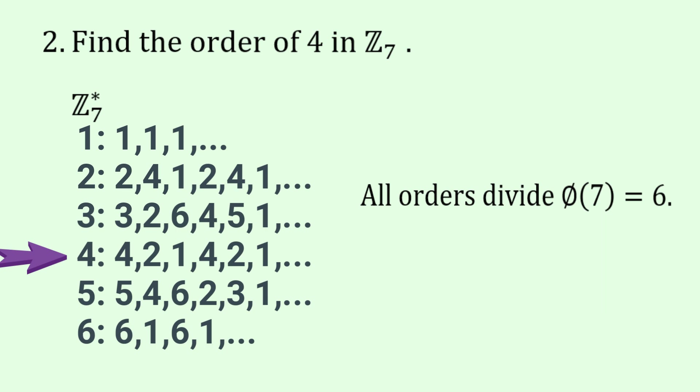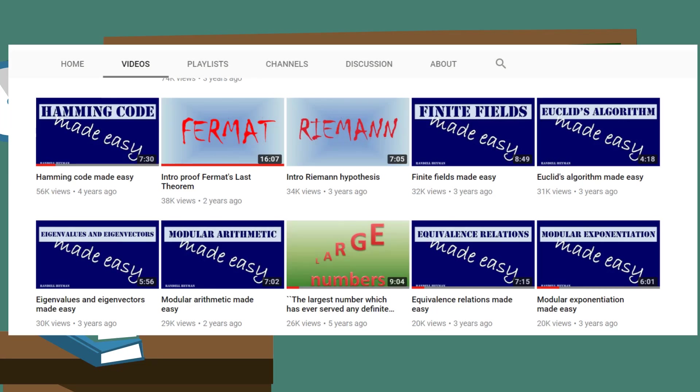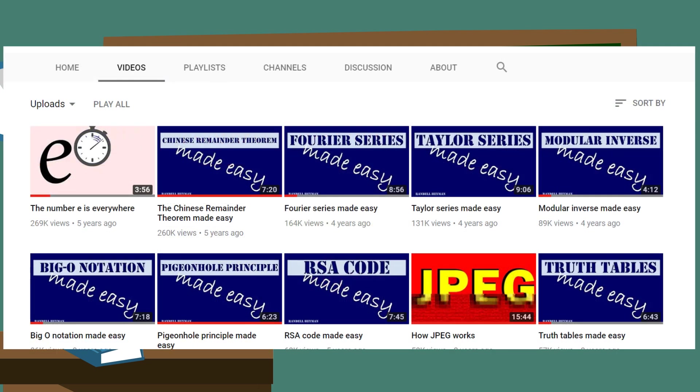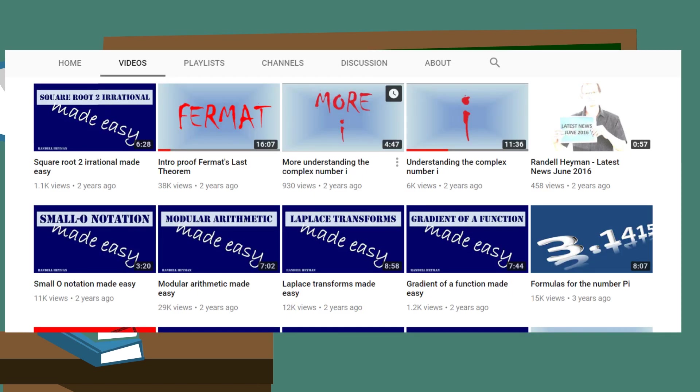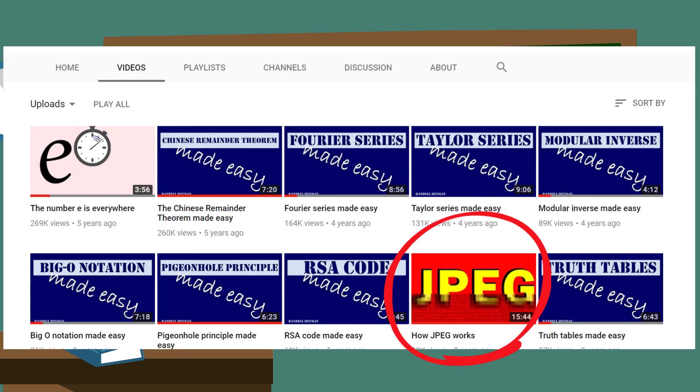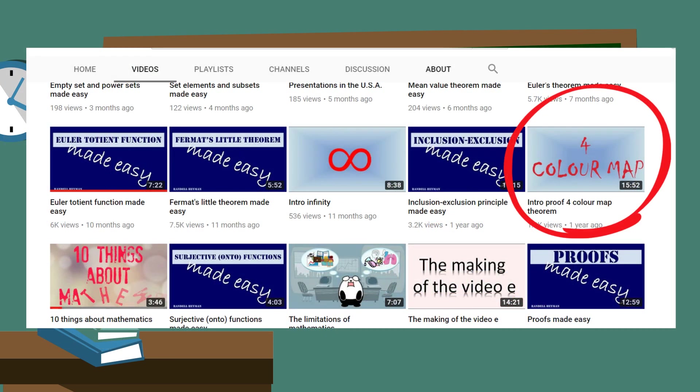Before I go on to the next question, I'd encourage you to have a look at some of my other mathematical videos on YouTube. There's over 60 of them. In response to some viewers' questions, the most viewed videos are Chinese Remainder Theorem, and the number E is everywhere, which have over a quarter of a million views. My favourite videos are Intro to the Proof Fermat's Last Theorem and How JPEG Works. And the hardest video to make was probably Intro to the Four Colour Map Theorem.